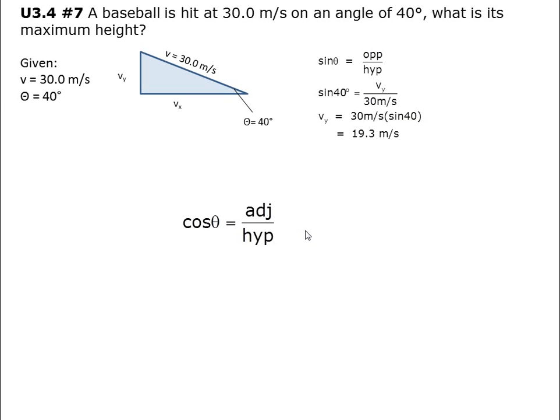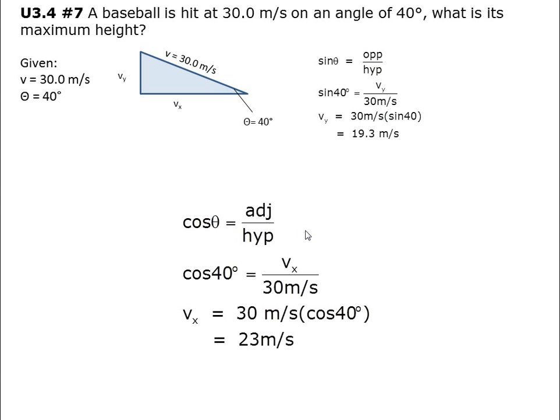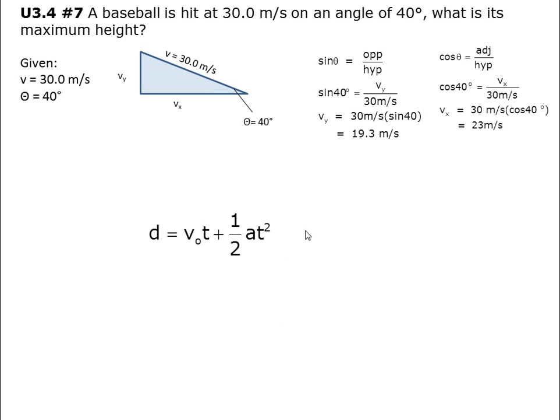Using the cosine rule, we're going to figure out Vx. Cosine 40 equals Vx over 30 meters per second. Vx equals 30 meters per second multiplied by cosine 40, which equals 23 meters per second.